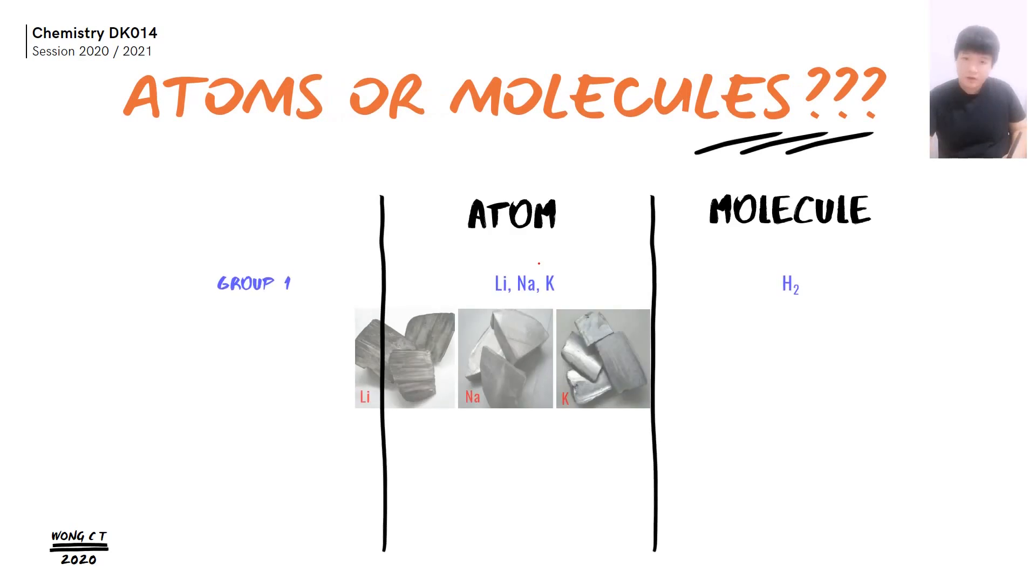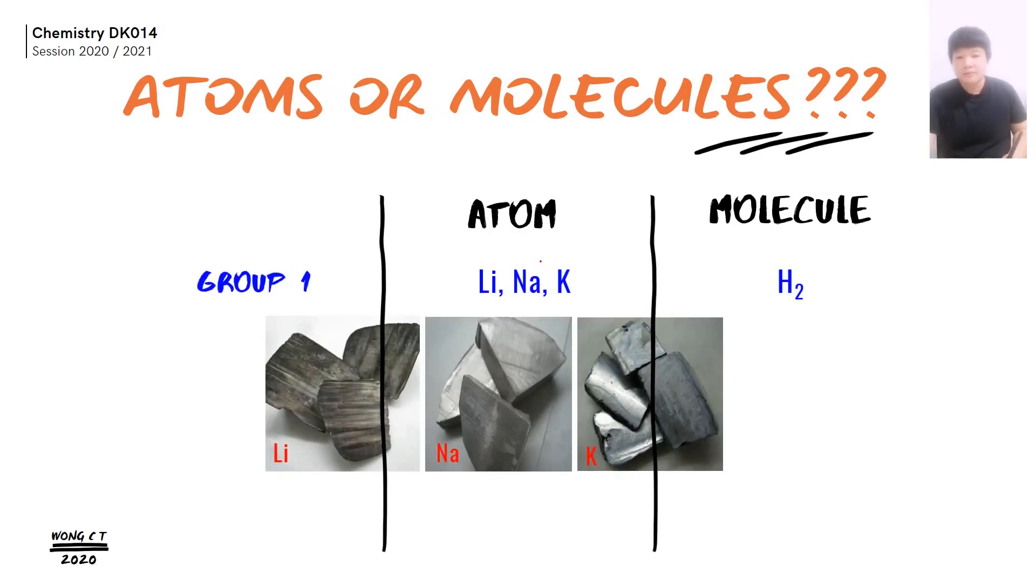So let's look at group 1. Group 1 element exists in the form of atom and molecule. For the atom, we have all the metal, lithium, sodium, potassium. While for the molecule, we have hydrogen gas, where hydrogen gas is the only non-metal in your group 1.